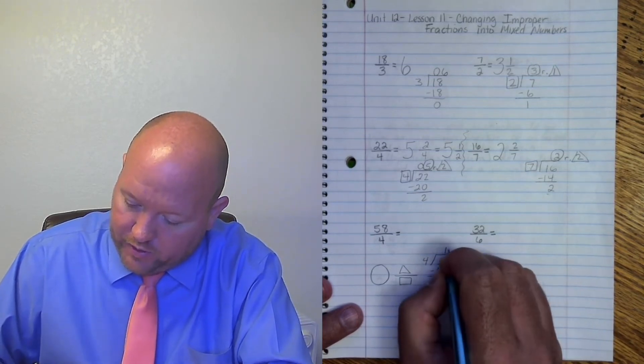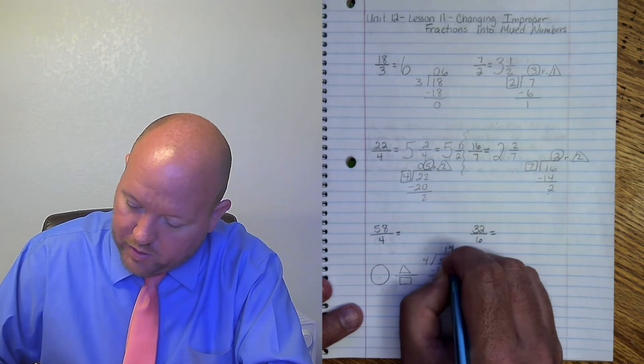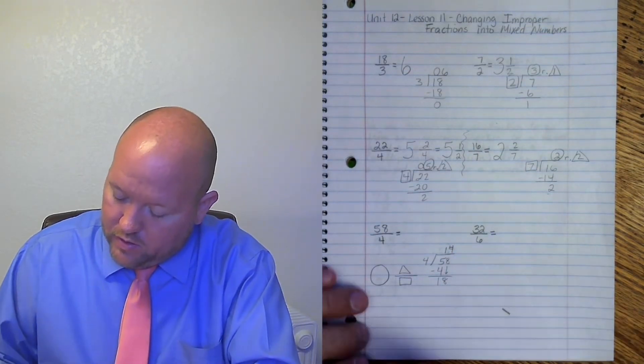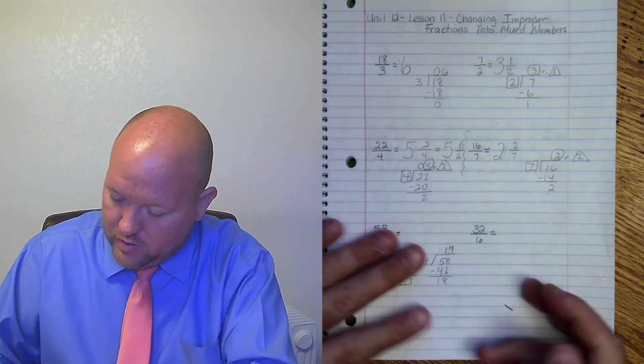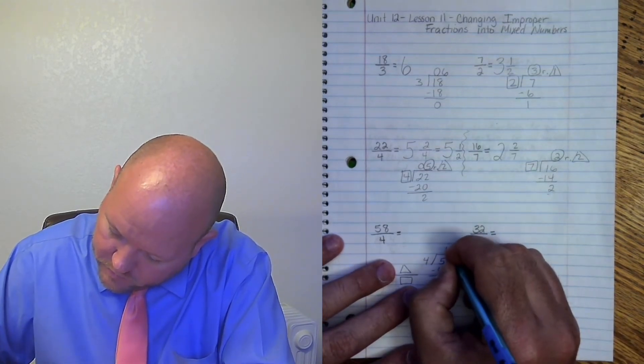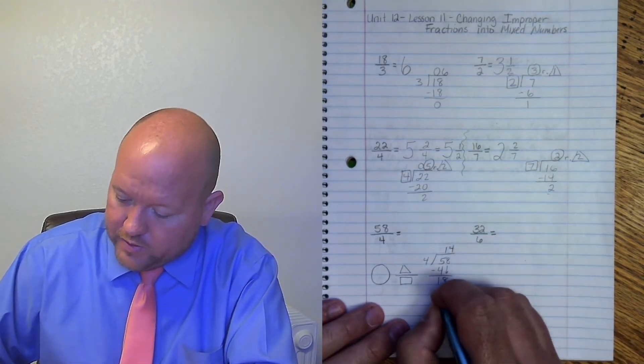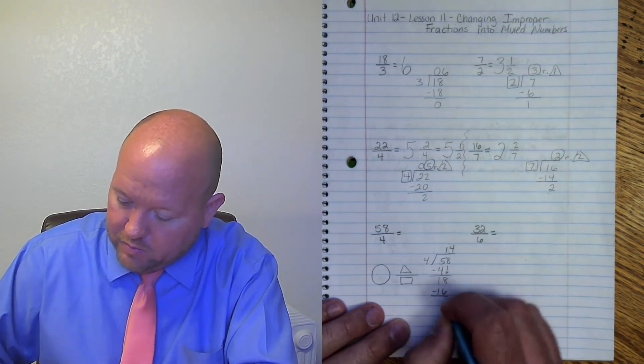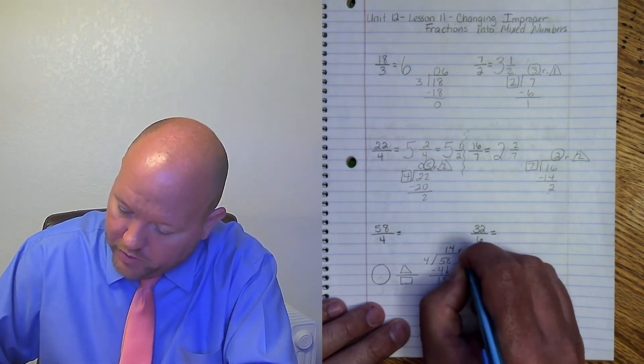4 goes into 18 four times. 4 times 4 is 16. 18 minus 16 is 2. Remainder 2.